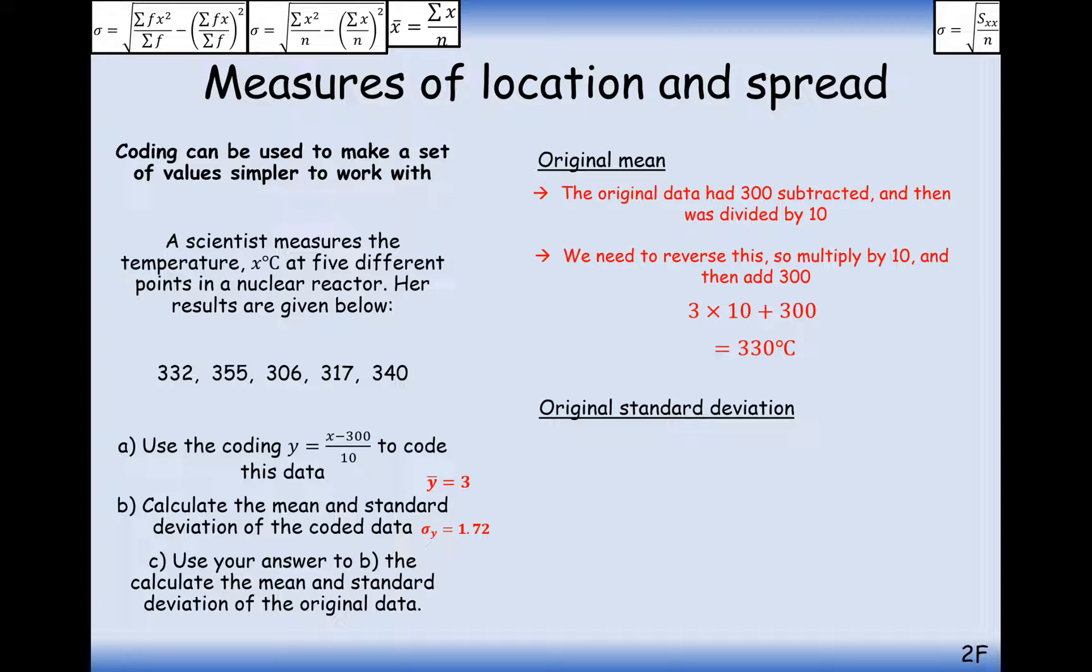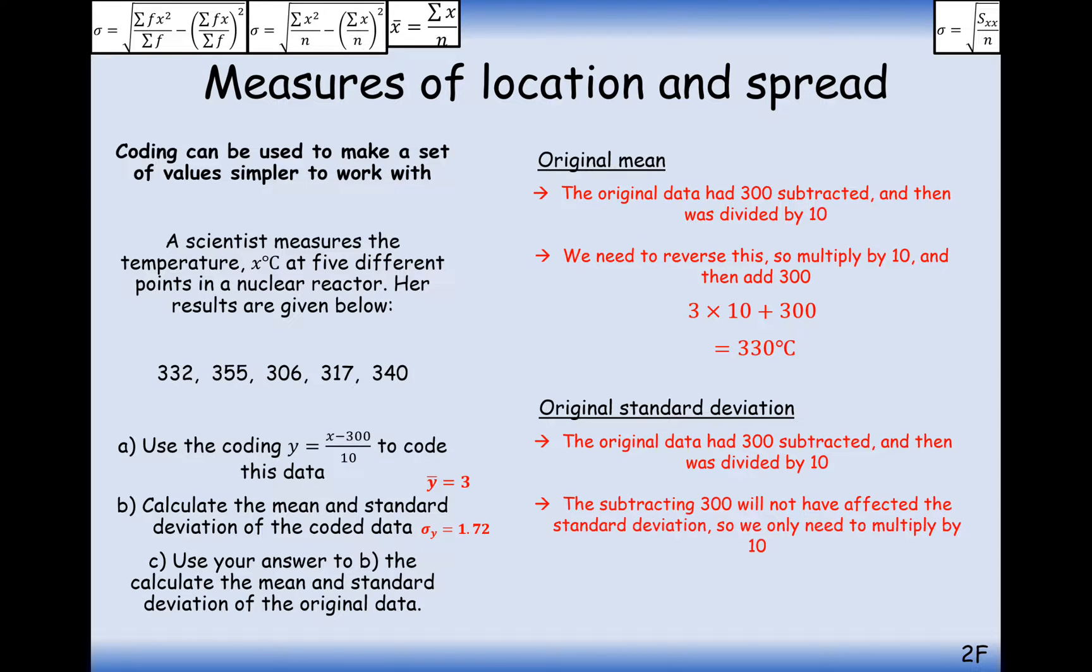With the standard deviation, it didn't affect the data. If we subtracted 300 from all of our data values, that's not going to affect the standard deviation. So we're just going to times it by 10 to get the standard deviation of the original set of data, which is 17.2. And that kind of makes sense, really, because if we take a centre of 330, our data is approximately spread out by 17.2 degrees Celsius.